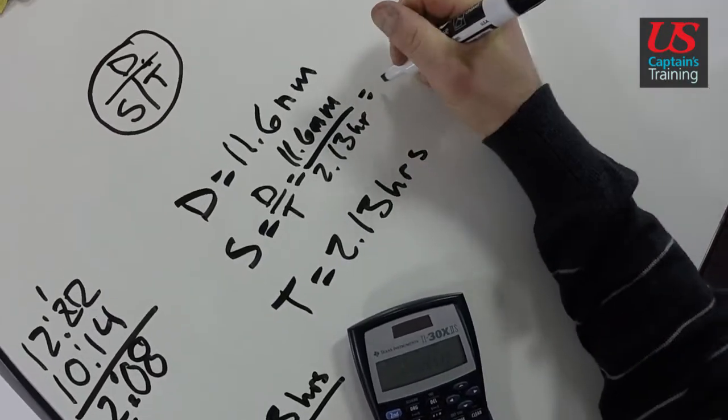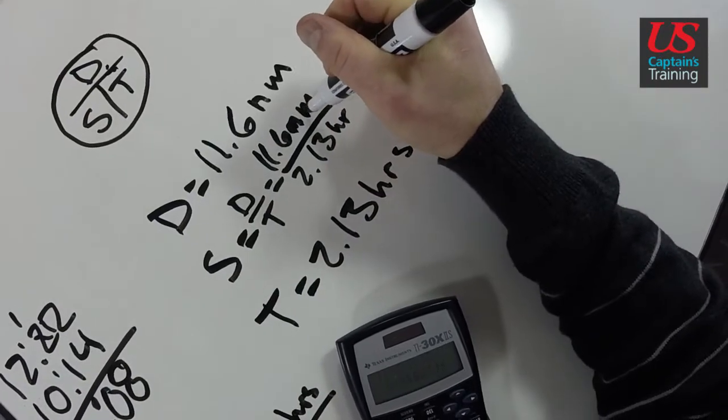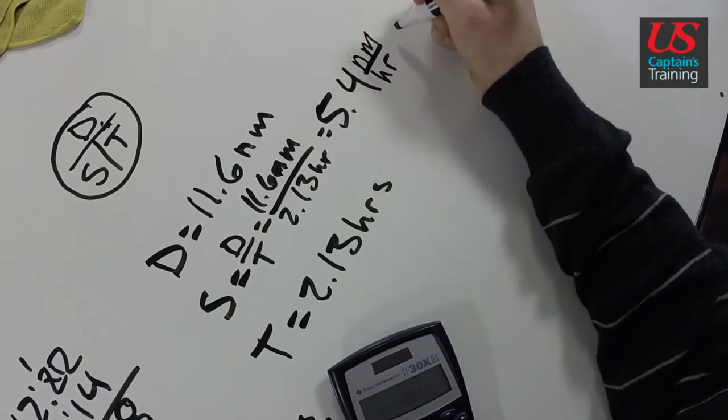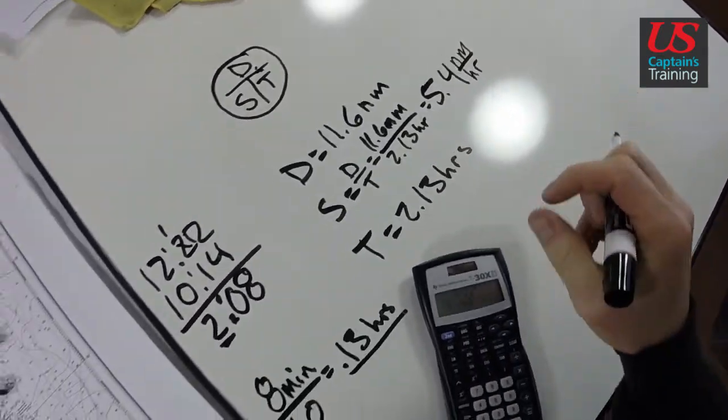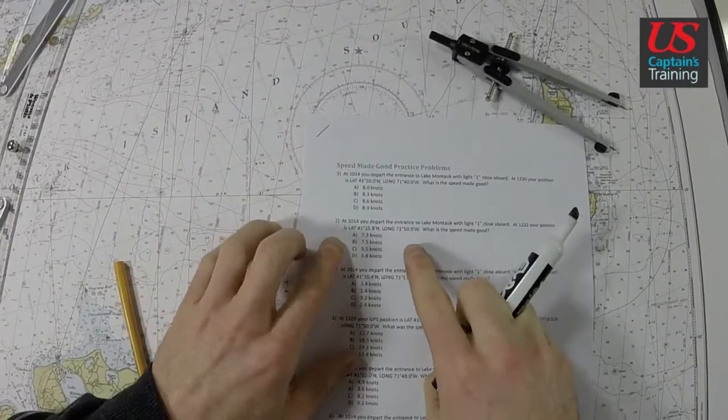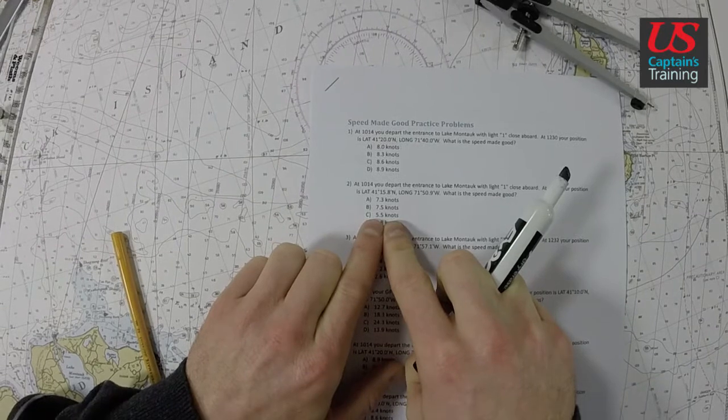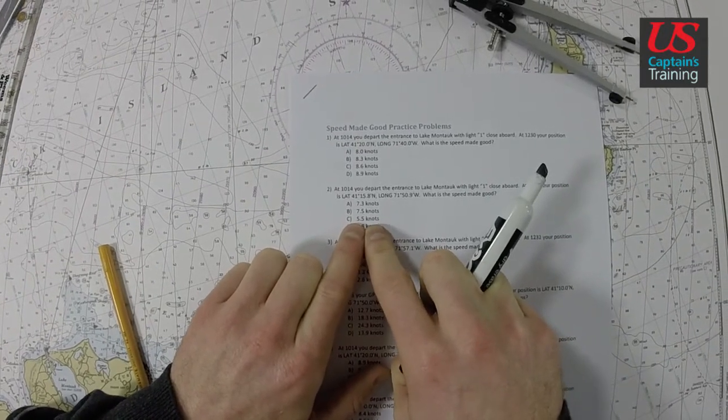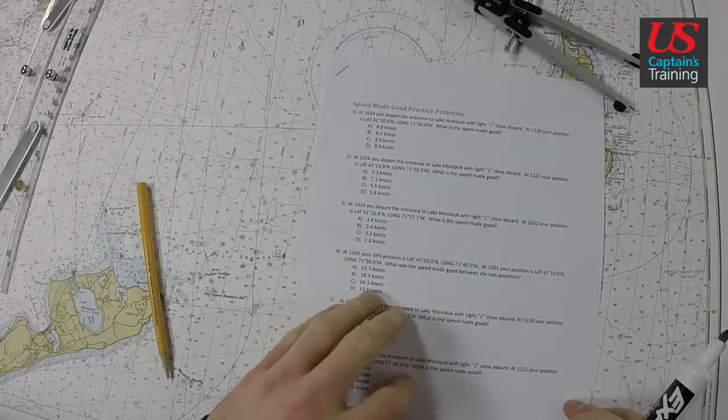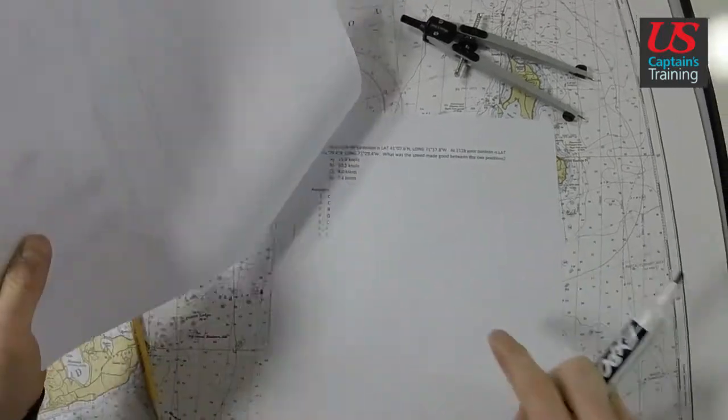11.6 divided by 2.13 hours equals 5.446. Now I'm going to say 5.4 nautical miles per hour, which is equal to knots. 5.4 knots is what we have for speed made good practice problem 2. We got 5.5 right there. That's close. Let's check that out. So 5.5, 2 is C. We have 2 is C. We got the correct answer.